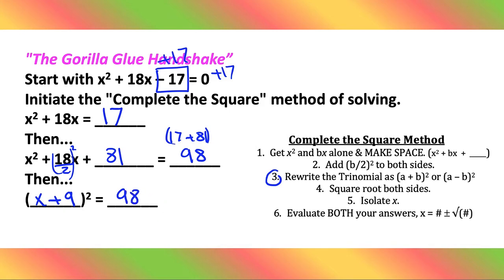Now we would do steps four, five, and six if we were to completely complete the square, but we're just initiating. So we're getting past the first three steps on this question, the Gorilla Glue Handshake. All right, cool, that's about it. Just follow the steps: make space, add b divided by two squared, rewrite as a trinomial. You're going to get the same number here and here. All right cool, see you in class students.